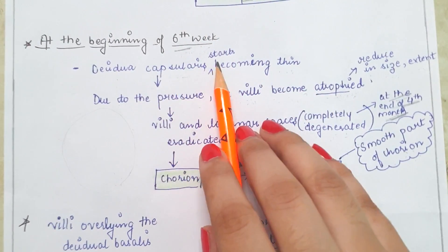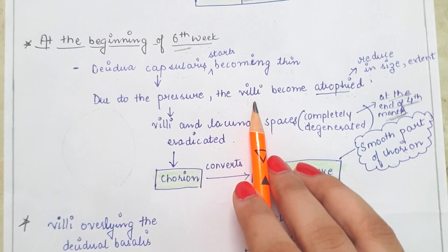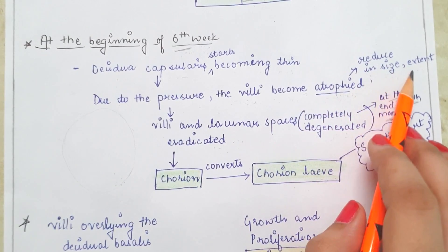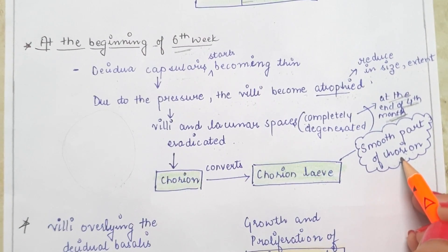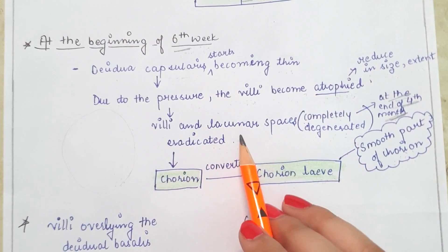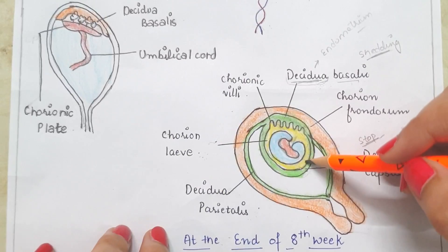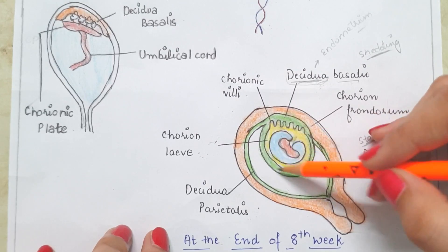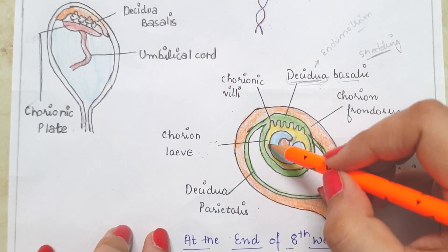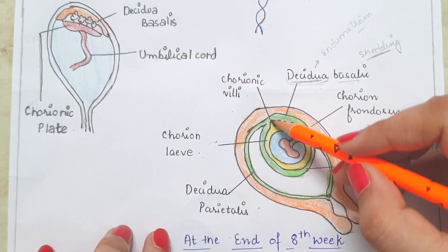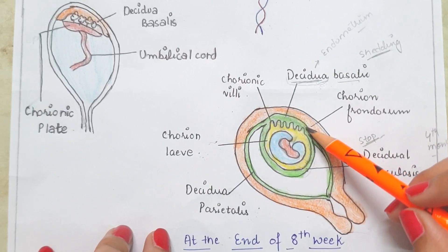At the beginning of the sixth week, due to the growing embryo, the decidua capsularis becomes thin and exerts pressure over the villi present on all sides of the embryo. Due to that pressure the villi become atrophied, and the chorion converts into chorion laeve — the smooth part of chorion without chorionic villi. The villi overlying the decidua capsularis completely degenerate by the end of the fourth month.